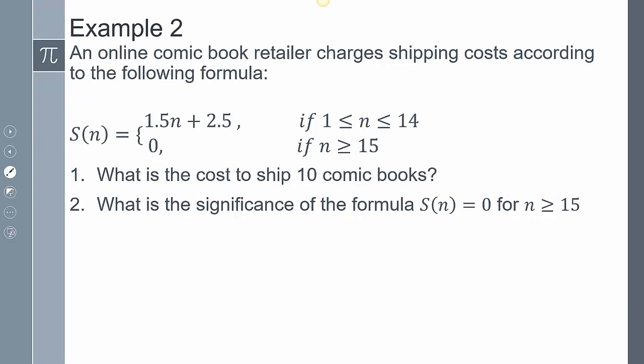Next one, it says an online comic book retailer charges shipping costs according to the following formula. And it says so the shipping costs dealing with n the number of comic books, so this is what the shipping costs is if you buy between one and 14. And if you have zero here, if the number is greater than or equal to 15, then the shipping cost is going to be zero. So what is the cost to ship 10 comic books? Well, 10 is going to exist between zero and 14. And so I plug it into this one here. And so that's going to give me 15 plus 2.5. So that's going to be $17.50. And so it's going to cost me that much to ship that.